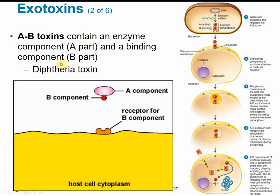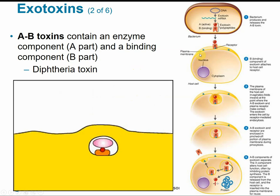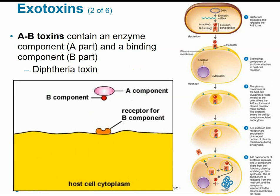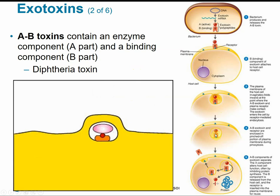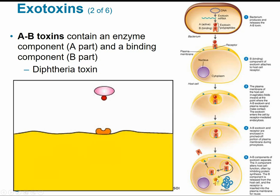AB toxins contain an active enzyme component (A) and a binding component (B). The AB exotoxin is released from a gram-positive cell. The B component binds to a host cell receptor and gains entry into the host cell. The A and B components then separate, and the active enzyme component carries out its function — generally inhibiting protein synthesis of the host cell.